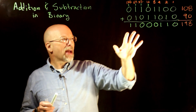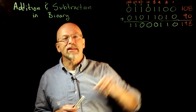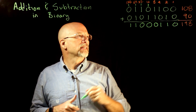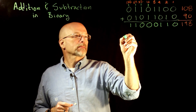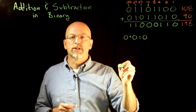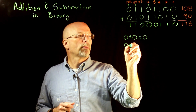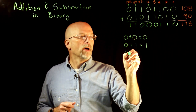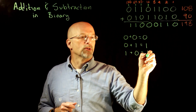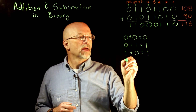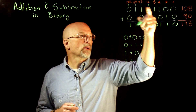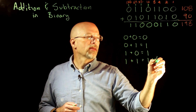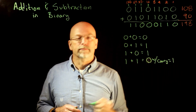Now let's look at every possible way addition can work in a single column. Zero plus zero equals zero. Zero plus one equals one. One plus zero equals one. And one plus one equals zero with a carry of one — that's the first case where we're required to carry.